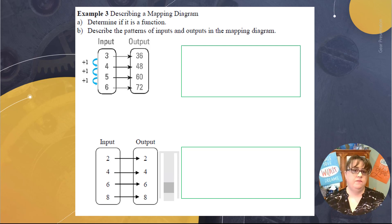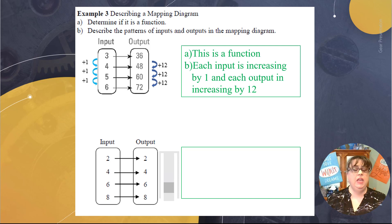Then I look at 36 to 48, 48 to 60, and 60 to 72. Those were all increasing by 12. And so we just talk about those. One, it is a function. And two, each input is increasing by one, and each input is increasing by 12. That's all we're looking for.